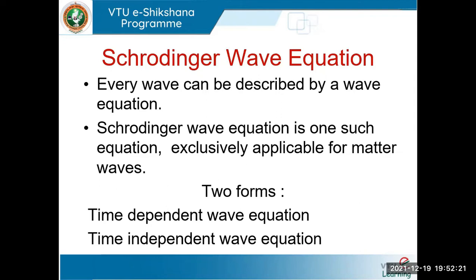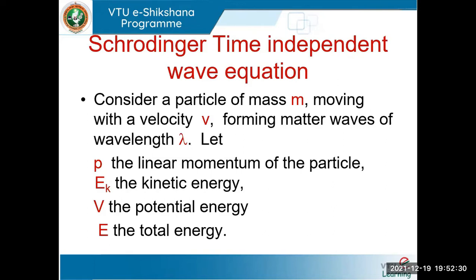In the syllabus we are supposed to develop the time-independent form of the wave equation. Before doing so, we consider a particle having mass m, moving with velocity v, forming matter waves of wavelength λ. As per the de Broglie concept, every moving particle is associated with a matter wave. We shall define p as the linear momentum, Ek as kinetic energy, V as potential energy, and E as total energy.